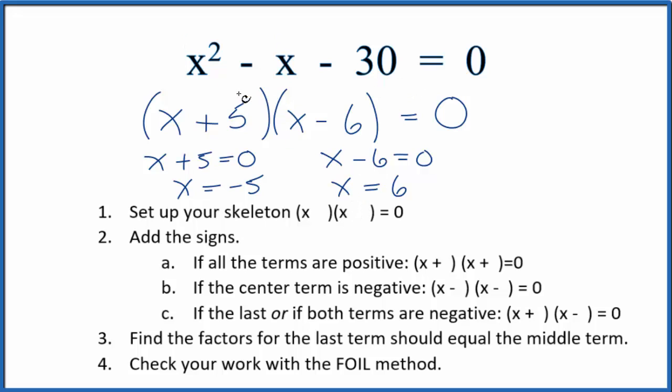This is Dr. B, factoring the equation x squared minus x minus 30 equals 0. Thanks for watching.